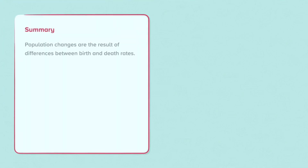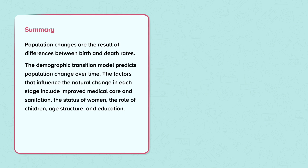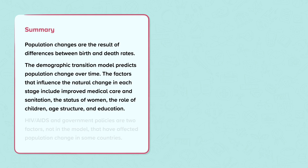Summary: Population changes are the result of differences between birth and death rates. The demographic transition model predicts population change over time. The factors that influence natural change in each stage include improved medical care and sanitation, the status of women, the role of children, age structure, and education. HIV, AIDS and government policies are two factors, not in the model, that have affected population change in some countries.